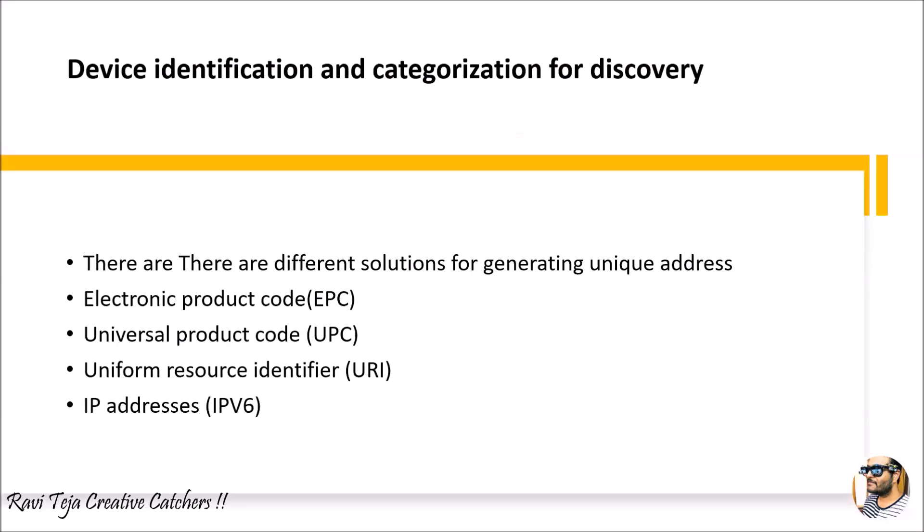Coming to user interoperability, device identification and categorization for discovery requires unique addresses to identify a particular device in a particular country or location. These addresses can be provided through Electronic Product Code (EPC), Universal Product Code (UPC), Uniform Resource Identifier (URI), and most popularly IP addresses. With respect to IoT, mostly IPv6 is used. These provide unique codes or addresses to identify and categorize a particular device used for IoT applications.